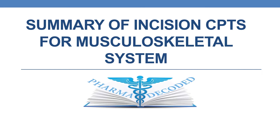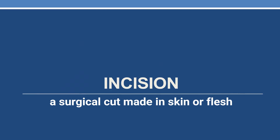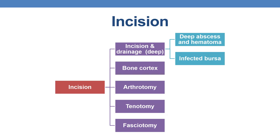We will be discussing the incision CPTs of all joints included in the musculoskeletal system. Incision is a surgical cut — or surgical opening — made in skin or flesh. When it comes to CPTs, incision is broadly categorized into five main types: incision and drainage (which includes deep abscess, hematoma, and infected bursa), incision into bone cortex, arthrotomy, tenotomy, and fasciotomy.